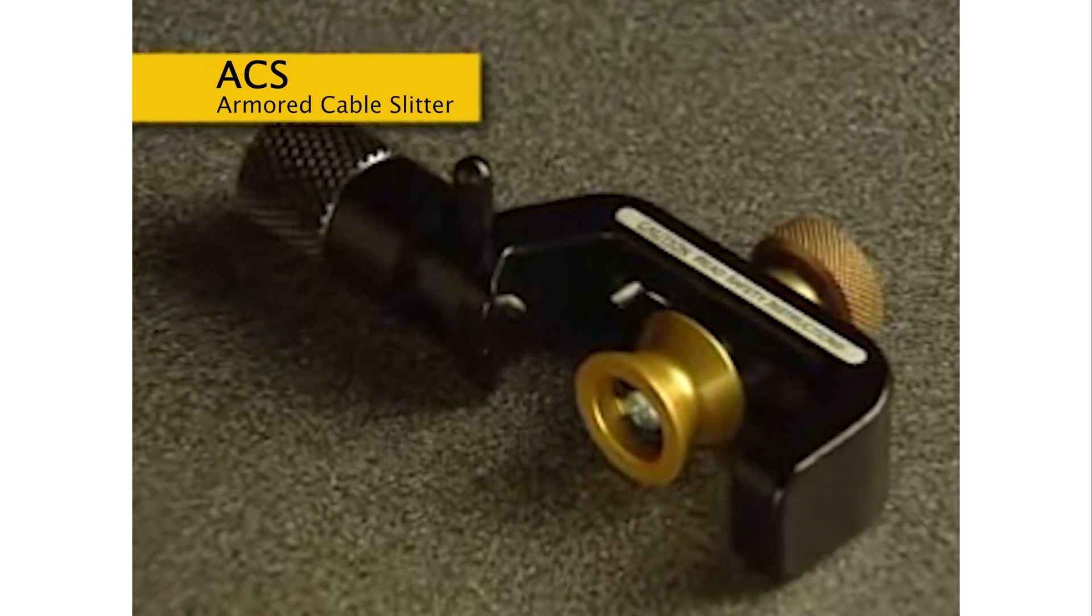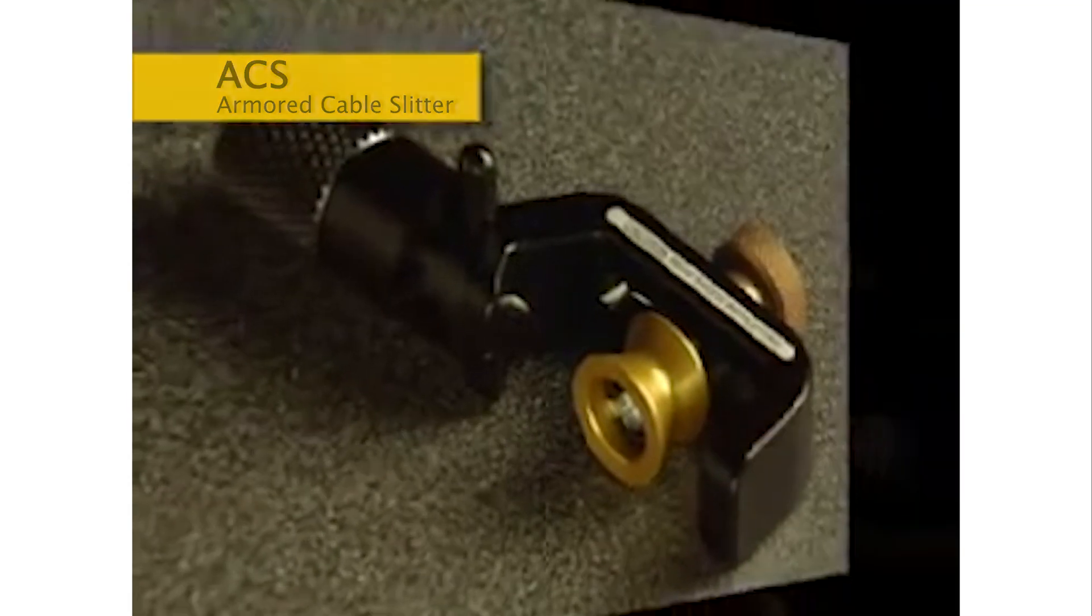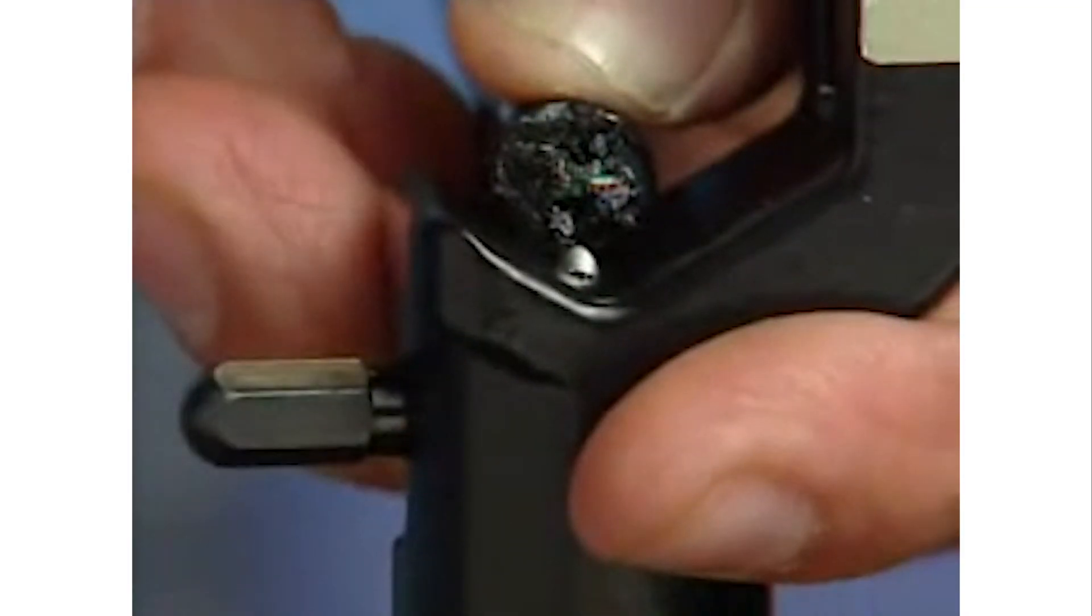To begin using the ACS, first set the blade depth by holding the stripper over the end of the cable to gauge the depth the blade should be set.